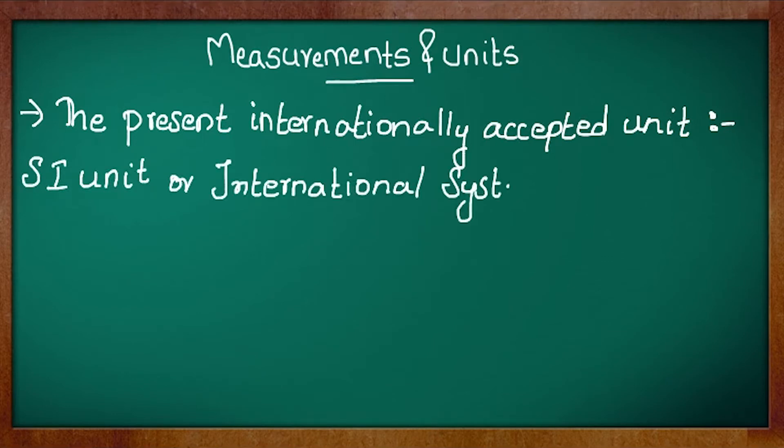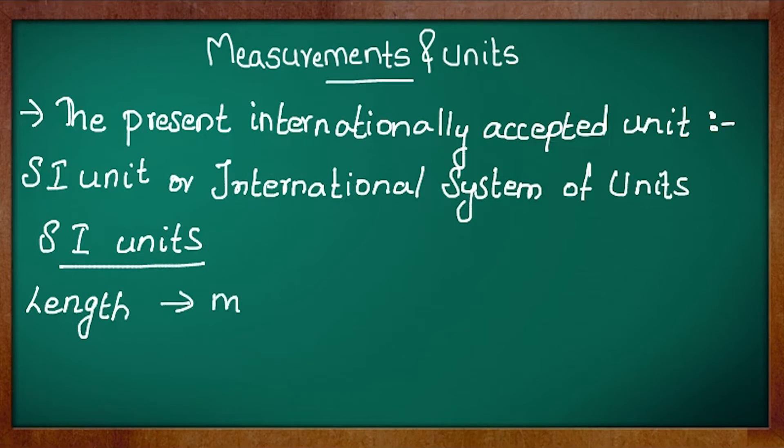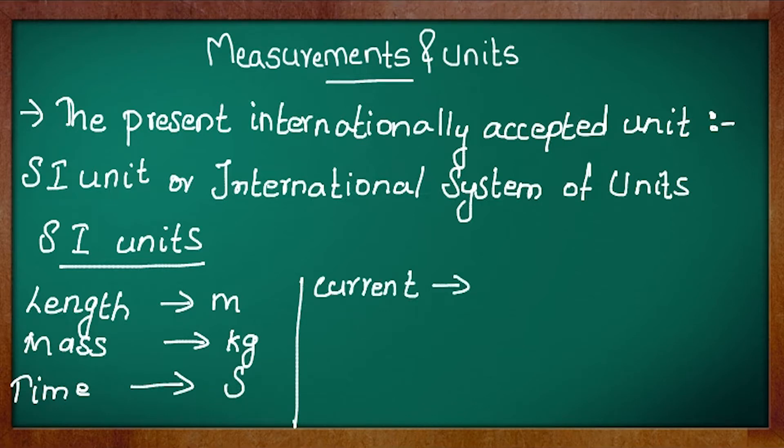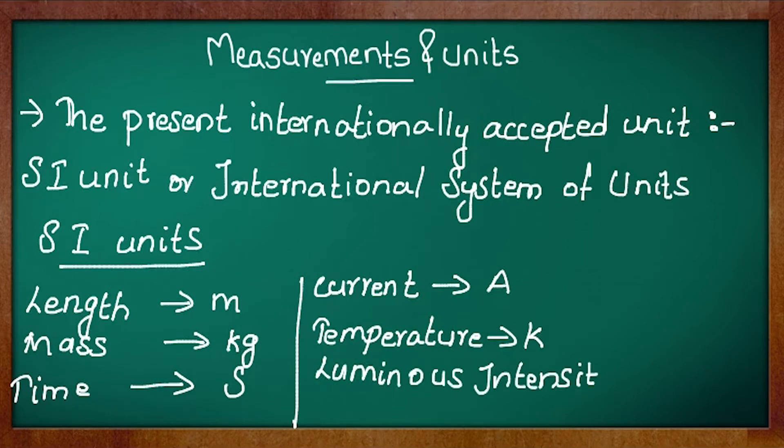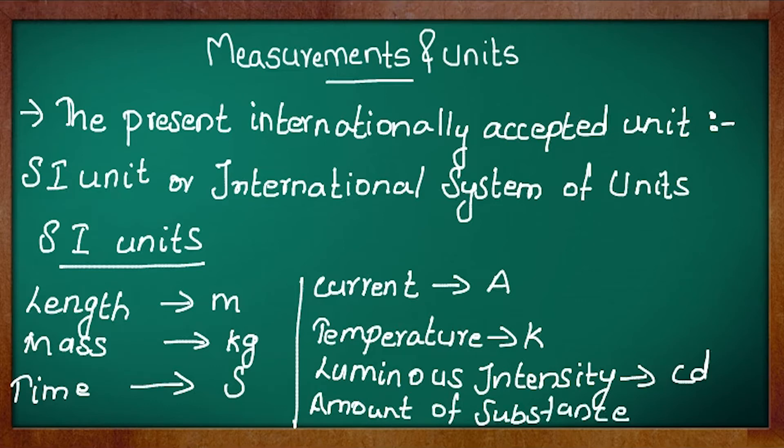Some of the SI units of physical quantities are: length, unit is meter; mass is kilogram; time is second; current is ampere; temperature is Kelvin; luminous intensity is candela; and amount of substance is mole.